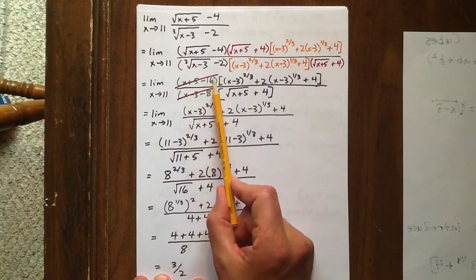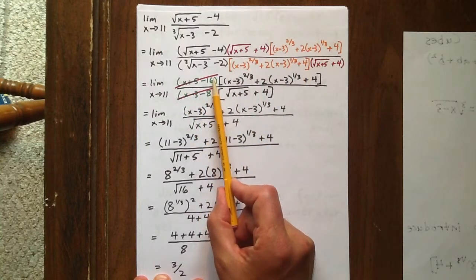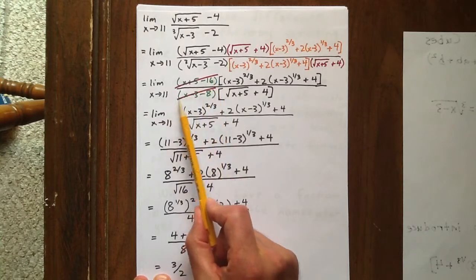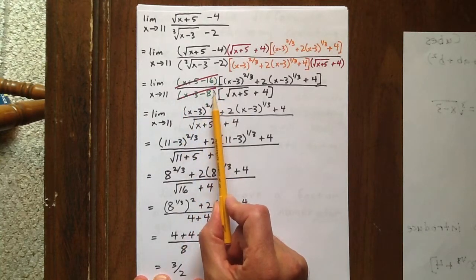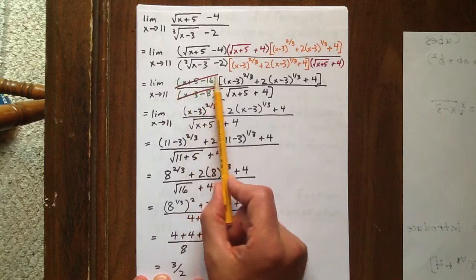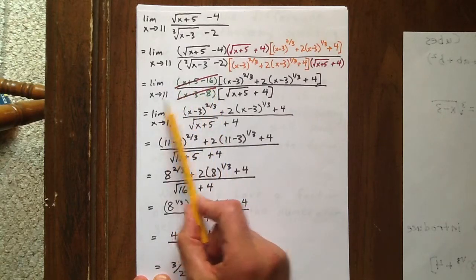Well, x plus 5 minus 16 is equal to x minus 11, and x minus 3 minus 8 is equal to x minus 11. So that was our offending factor, and we're able to cancel it out.